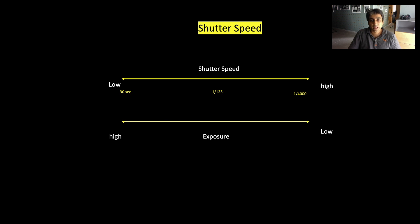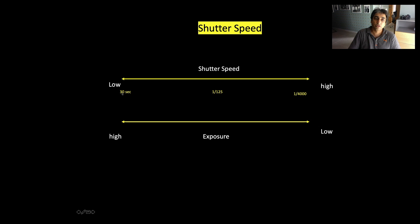If it is open for 1/4000 of a second, the light entering into the camera will be much lesser in terms of time. When I set my shutter at 1/4000, it stays open for a much shorter time than when I set it at 1/125. And if I set it at 30 seconds, it stays open for 30 seconds versus 1/4000 of a second. So when we have a faster shutter speed, the light hits the sensor for a lesser amount of time, resulting in a lower exposure.